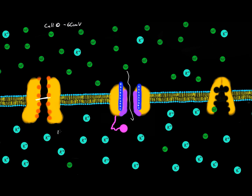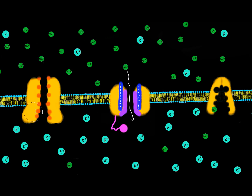If we had 100 potassium channels open, there'd be about five sodium channels open. That levels out around negative 68 millivolts, because when sodium goes with its concentration gradient from a high concentration to a low concentration, it decreases the voltage on the outside of the cell. As sodium ions go from the outside to the inside, they bring positive charges inward, making the outside slightly negative and the inside positive.